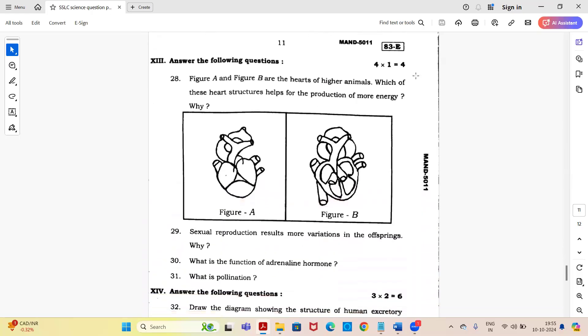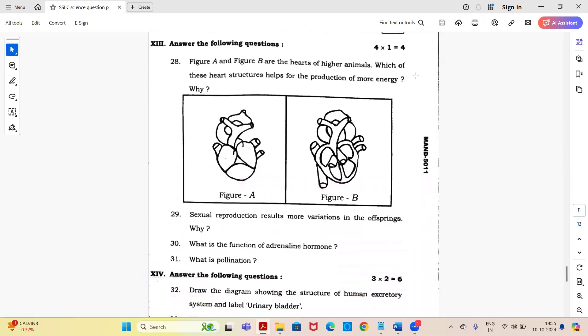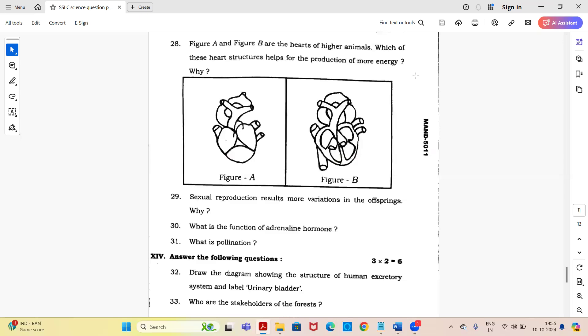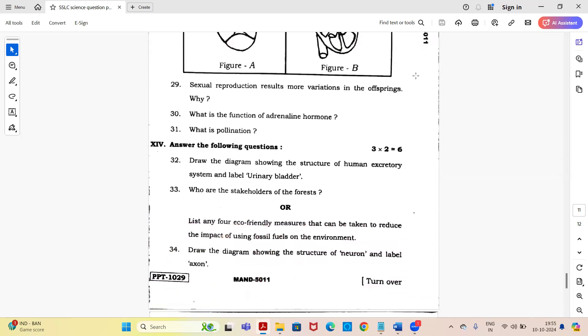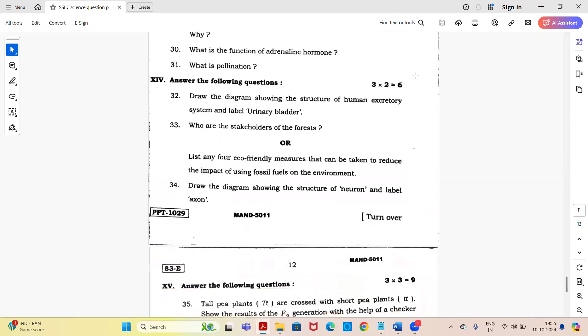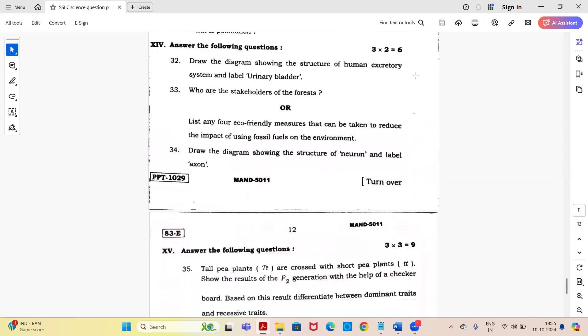Next main, four marks. Figures A and B are the hearts of higher animals. Which of these heart structures helps for the production of more energy, why? Observe the figures and write your answer. Question 29: sexual reproduction results in more variations in the offspring, why? What is the function of adrenaline hormone? What is pollination?